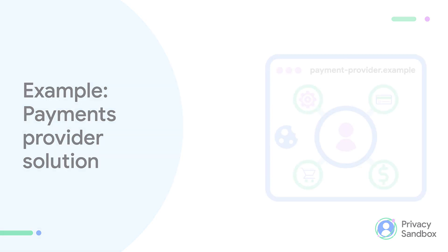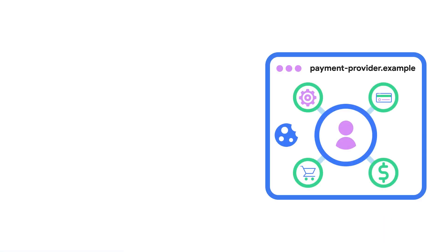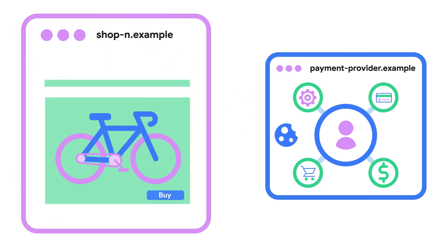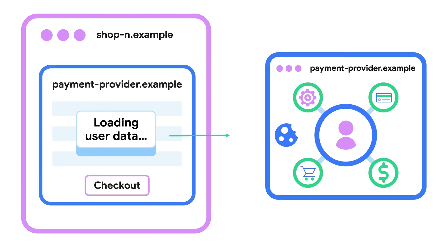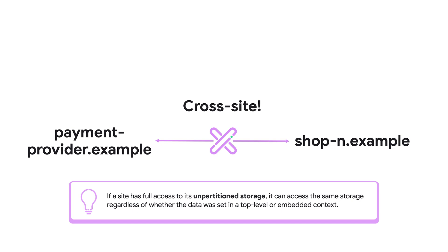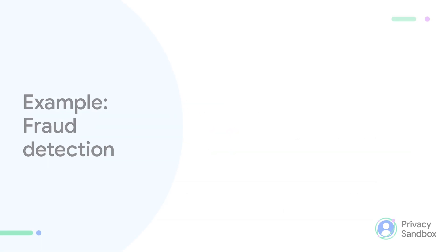Here is another example. Imagine you distribute a payment solution, paymentprovider.example. Other shops can rely on this solution, and when it comes to checkout, they render a checkout form provided by paymentprovider.example. When third-party cookies are blocked, paymentprovider won't be able to access its own partition storage. This means the widget cannot recognize returning users. As a result, user-saved information such as preferred payment method or delivery address won't fill automatically, and the user may have to re-enter their information.